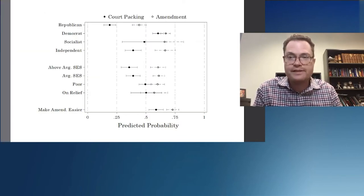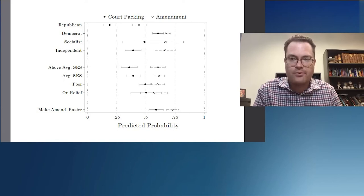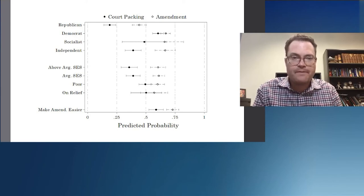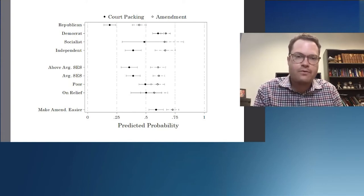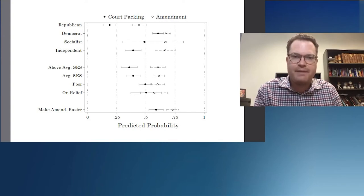We can also see this reflected in public opinion polls. So on the y-axis, going from the top to the bottom of the screen, you can see Republicans, Democrats, socialists, and independents.